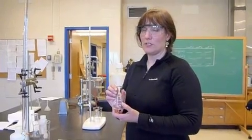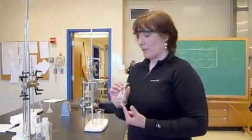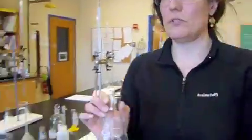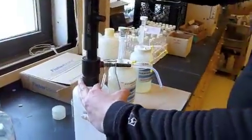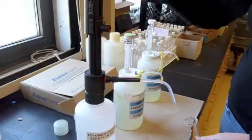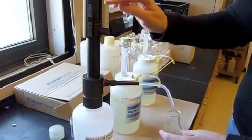I'm going to take my 125 milliliters Erlenmeyer flask, and I'm going to walk over to this re-pipet situation. This is potassium iodate. You pull this up, it will immediately put out whatever it's set for. This is at 10 milliliters, so that's what I need.